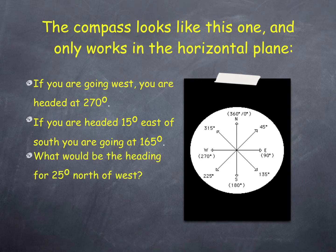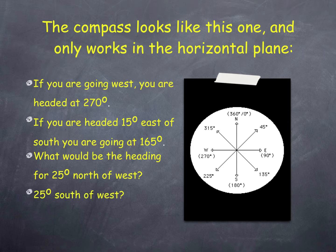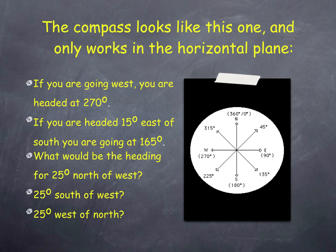What would be my heading if I'm going 25 degrees north of west? If I'm north of west, I start with west at 270, and north of that means numbers are getting bigger, so 270 plus 25 equals 295. If I'm going 25 degrees south of west, the numbers get smaller: 270 minus 25 equals 245. What if I'm going 25 degrees west of north? North from the west side looks like 360, so 360 minus 25 means I'm going at 335.